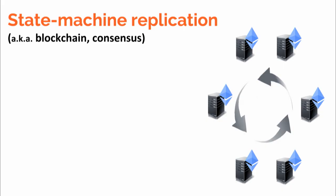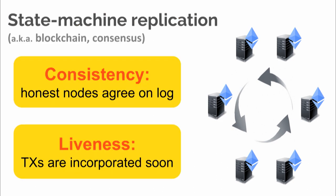The problem we are going to try to solve throughout the talk is called state machine replication. It's also called blockchain or consensus, and in this talk they all mean the same thing. We have a set of Ethereum nodes in this example, and these nodes are trying to agree on a linearly ordered log of transactions.